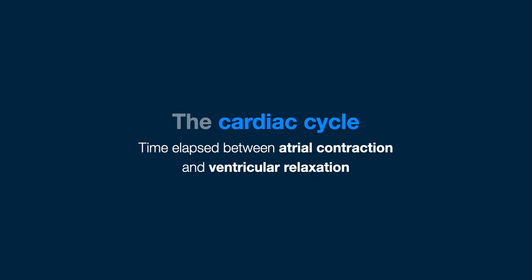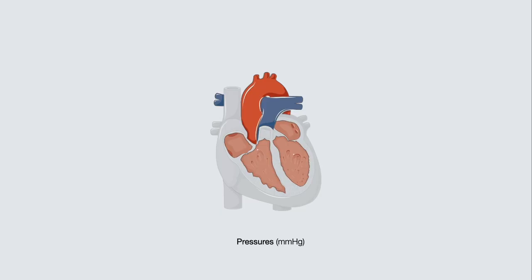Let's review the changing pressures within the heart. All pressures are in millimeters of mercury. The right atrial systolic pressure is approximately 5, the right ventricle is 25, the pulmonary artery is about 25, the left atrium about 10, and the left ventricular and aortic pressures are about 120. For diastolic pressures, the right ventricle is about 5, pulmonary artery 10, left ventricle is 15, and aortic diastolic pressure is about 80.